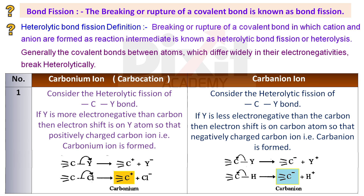Distinguish between carbonium ion and carbanion ion. Point number 1: Consider the heterolytic bond fission of a C-Y bond. If Y is more electronegative than the carbon atom, then the electron shift is onto the Y atom, so that a positively charged carbon ion — that is, a carbonium ion — is formed.